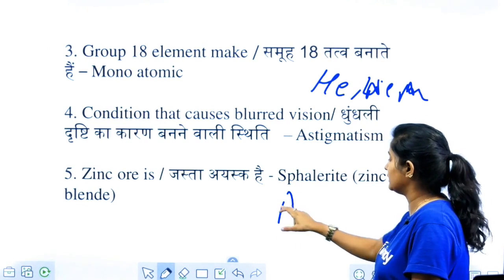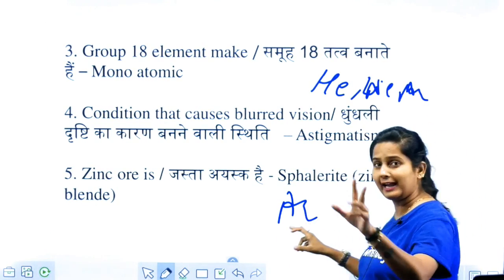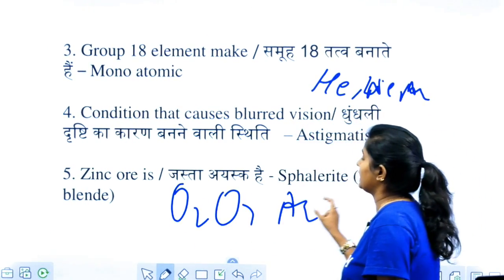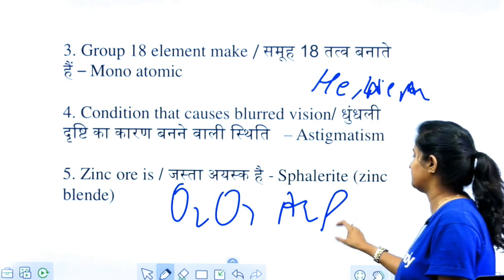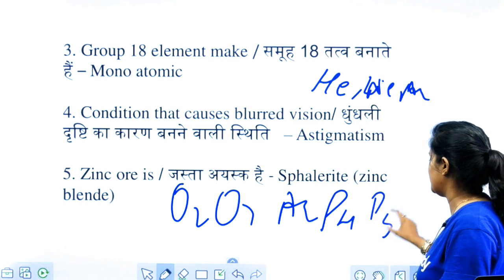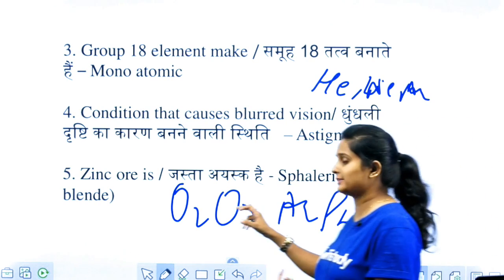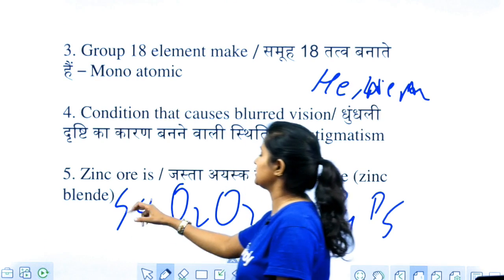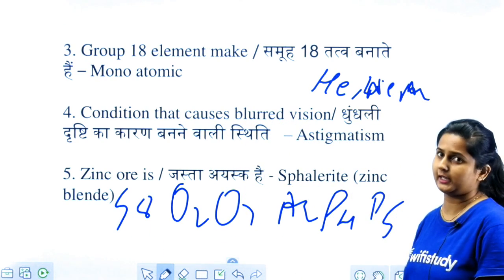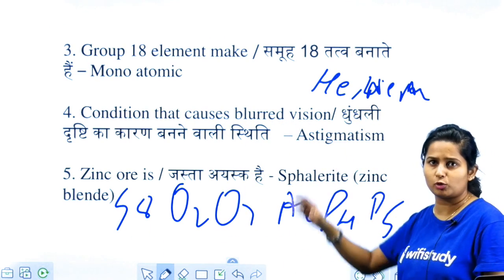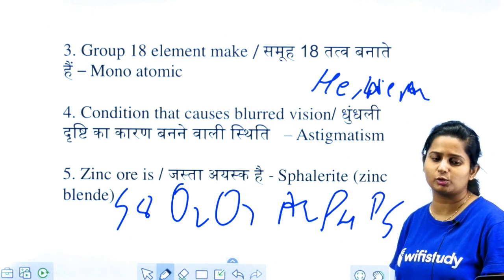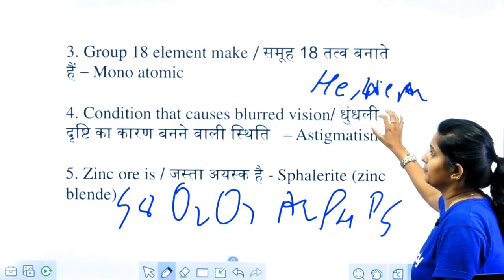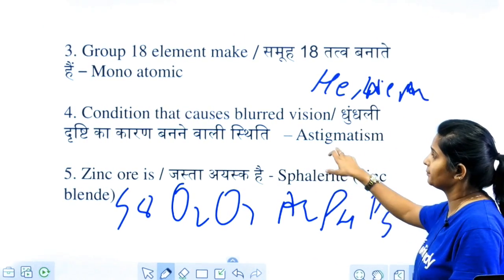What about others? Diatomic: O2. Triatomic: O3. Tetraatomic: P4. Sulfur is also in this family. Group 18 elements are all monoatomic.